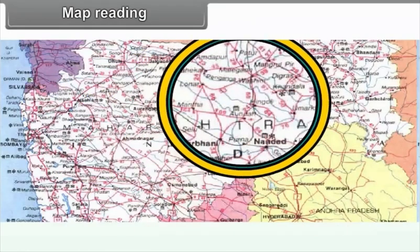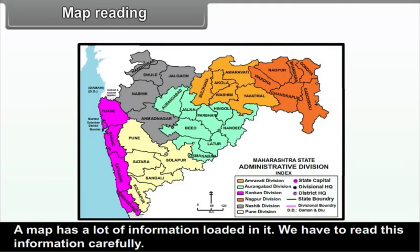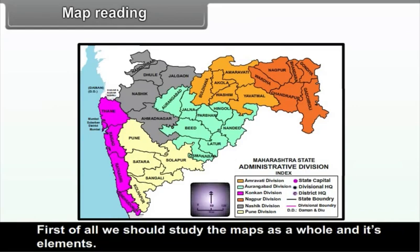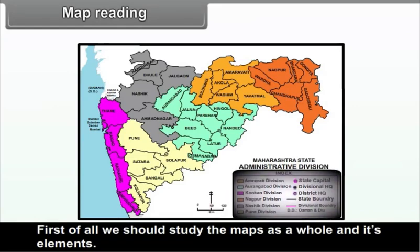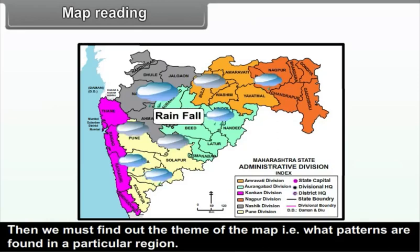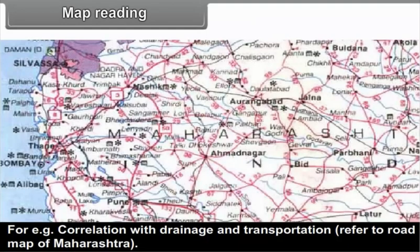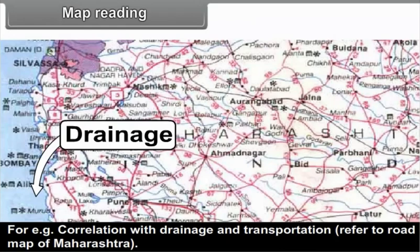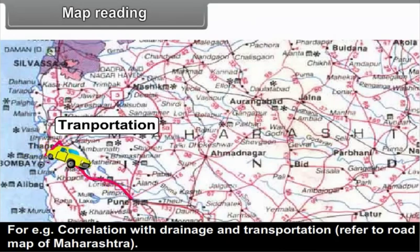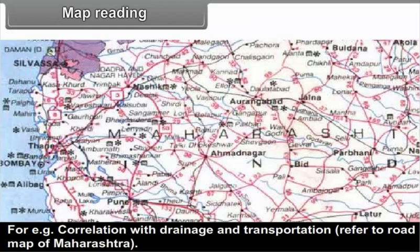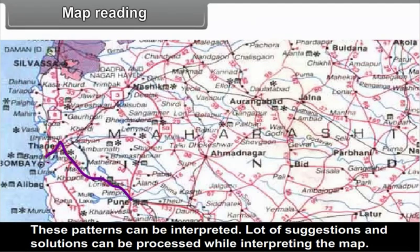Map Reading: A map has a lot of information loaded in it, which must be read carefully. First, study the map as a whole and its elements, then find out the theme — what patterns are found in a particular region. For example, the correlation between drainage and transportation. Refer to a road map of Maharashtra. These patterns can be interpreted, and many suggestions and solutions can be processed while interpreting the map.